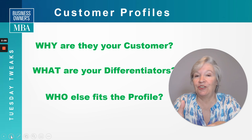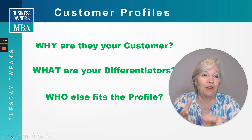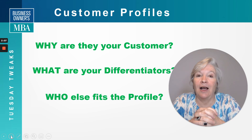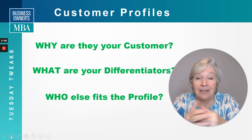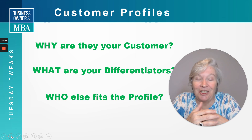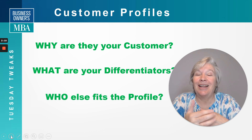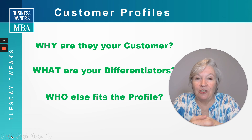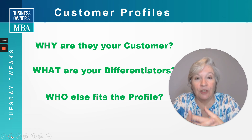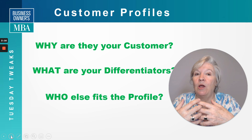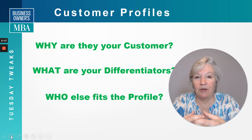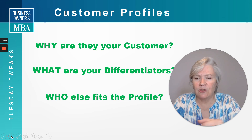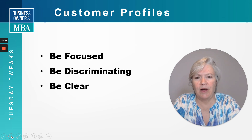Obviously there are other options — you could join Vistage, you could join EO, you could join Goldman Sachs, which I teach. But they choose to be in my program because they want to learn their numbers. That's where I focus. So, what's your differentiator? And then continue to ask: who fits this profile?